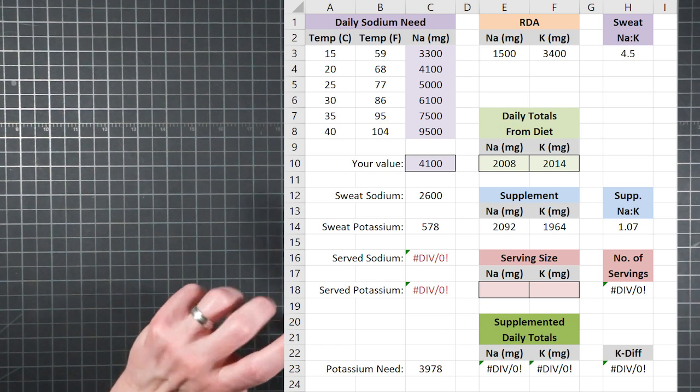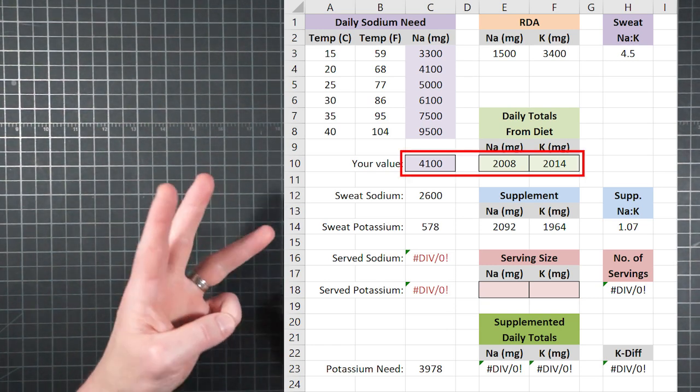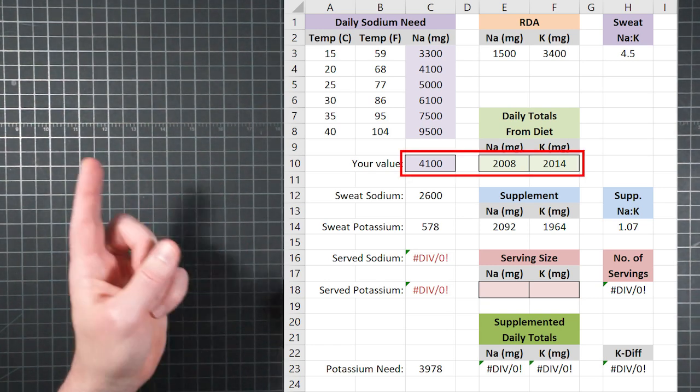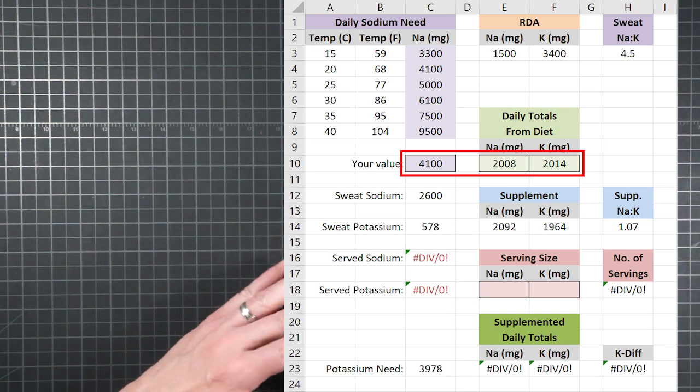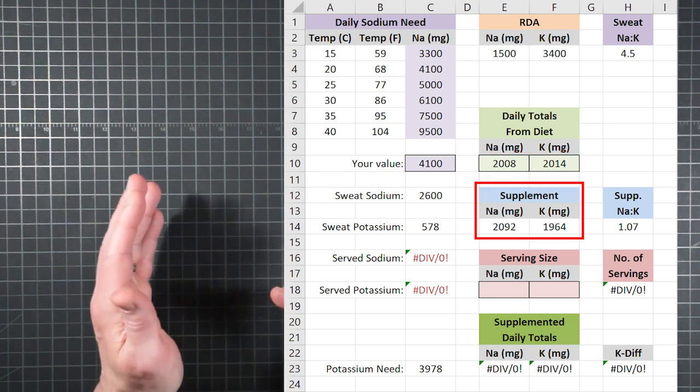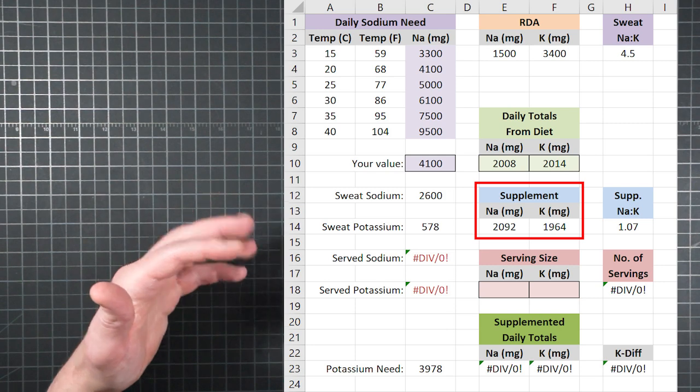So an all day hike in 68 degree weather is going to require 4,100 milligrams of sodium, but I'm only getting 2008 in my diet. So I'll have to take an additional 2,092 milligrams in electrolyte supplements to meet my total daily need. Easy peasy, right? But seriously, all we've done so far is just pick three numbers.